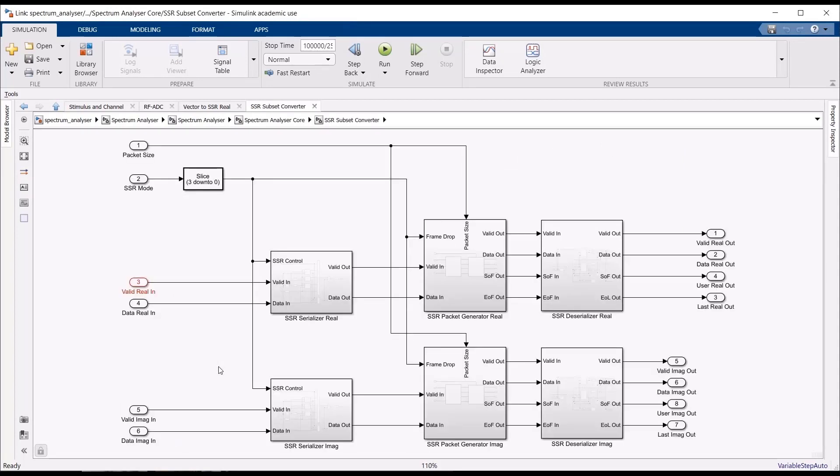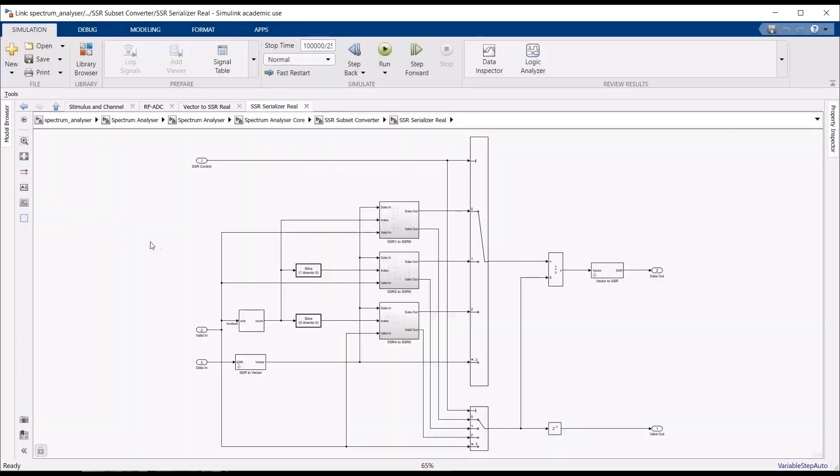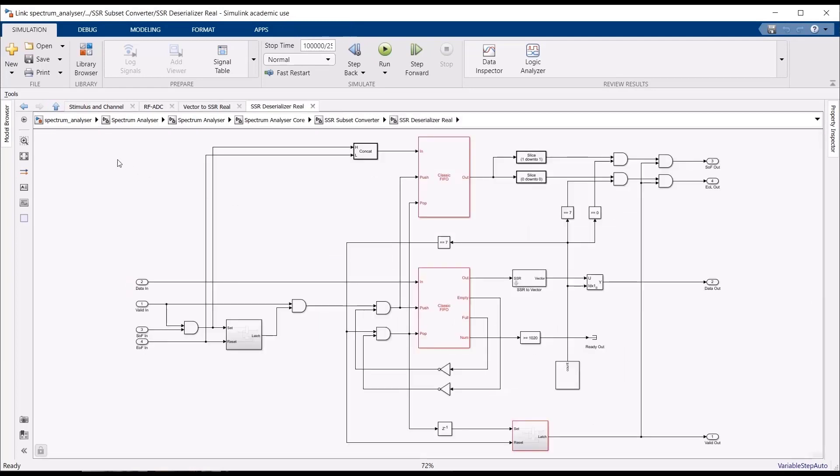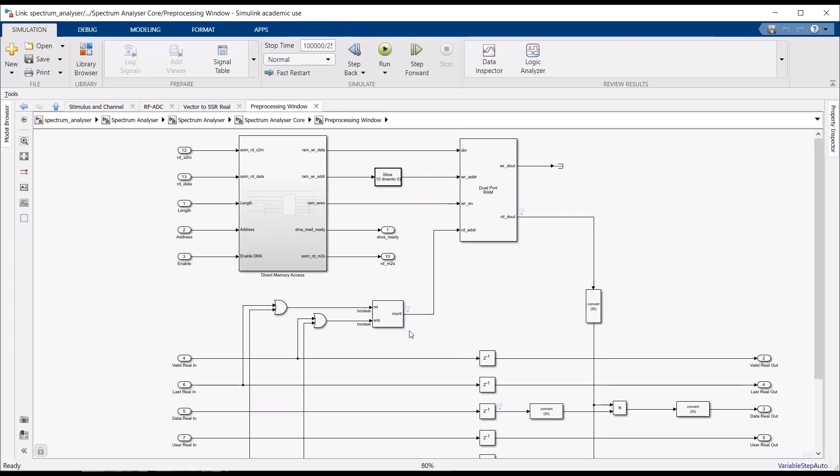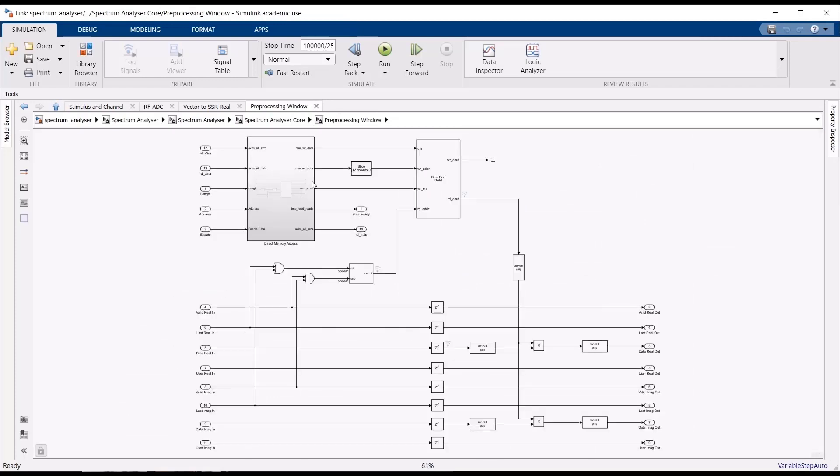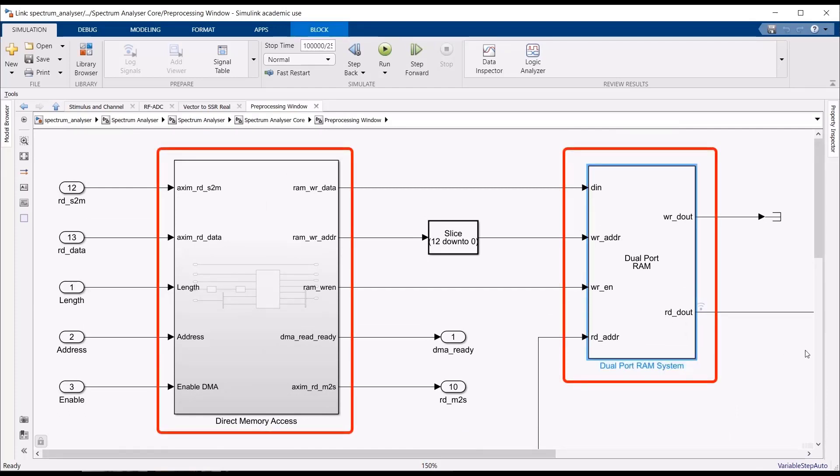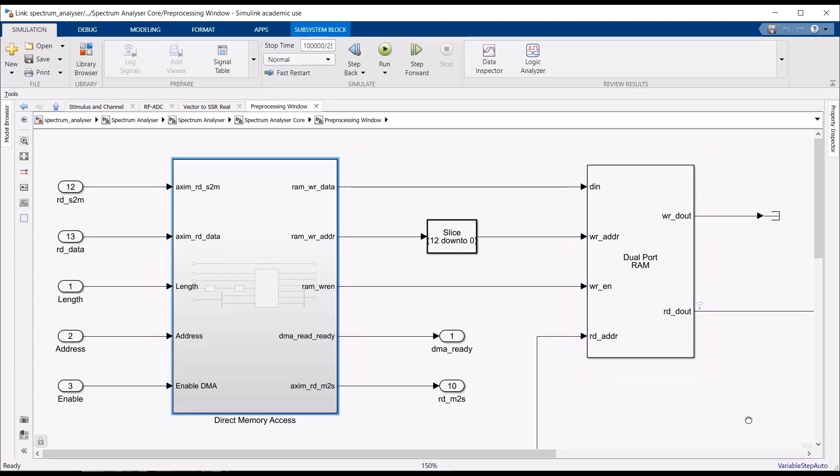Drilling down into the design hierarchy, we can see several of the Spectrum Analyzer's features. The first is the Super Sample Rate Converter, or SSR Converter. As shown, the SSR Converter uses primitive HDL-coder blocks to manipulate the incoming signal. Moving on, we can see the reprogrammable window design. This particular feature requires a Direct Memory Access controller to move data from external memory into an on-chip block RAM. The block RAM is then accessed to apply windowing to an incoming data stream using a simple multiplication.